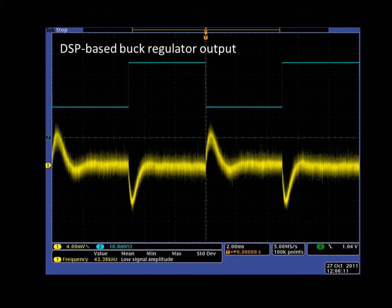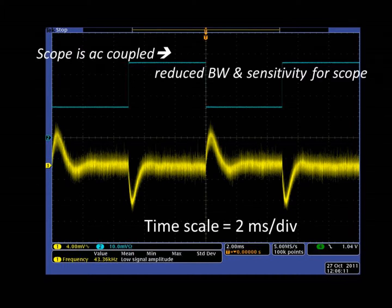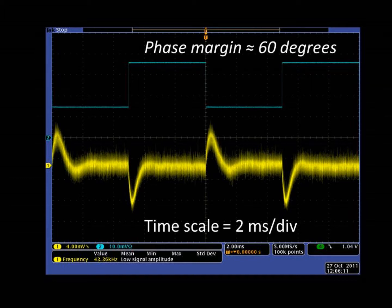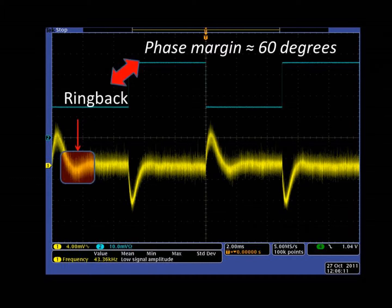This output voltage waveform is obtained from a DSP-based buck regulator tuned for optimum response to a transient. It is very well behaved in this view, which is taken at a time scale of 2 ms per division. And despite the scope being AC coupled, the image is clear enough for us to see the transient response recovery, indicate a good transient response. The phase margin is close to 60 degrees, evidenced by the very slight ring back, which is not at all evident at 70 degrees.